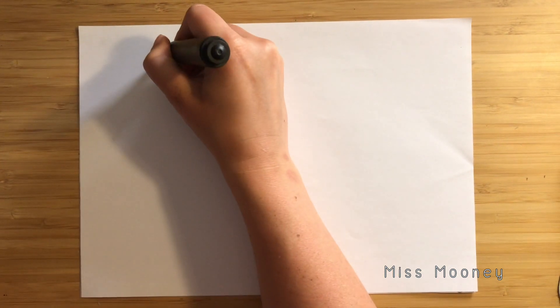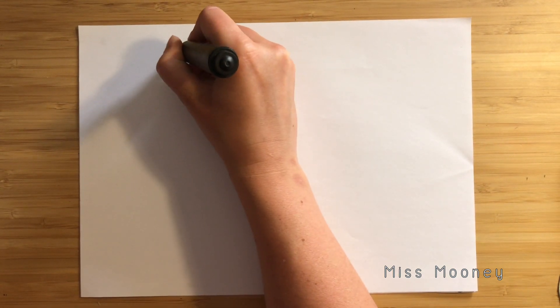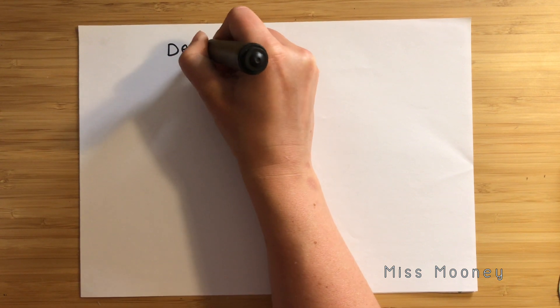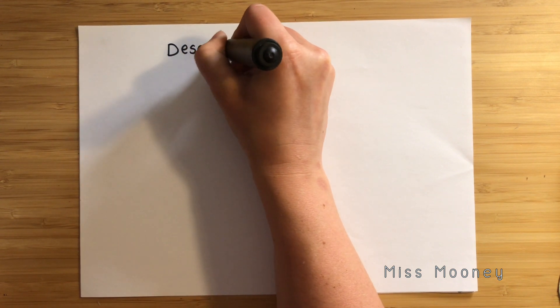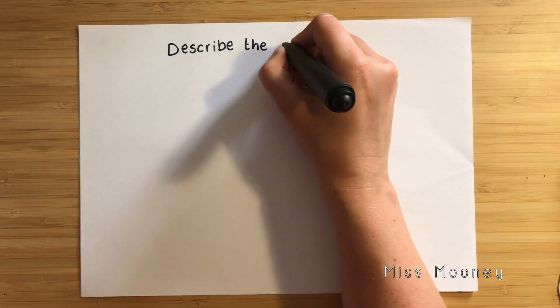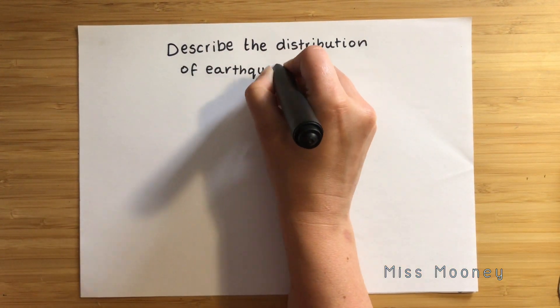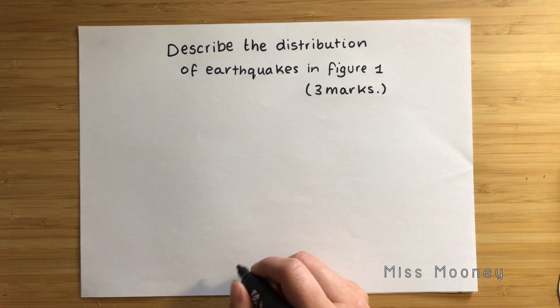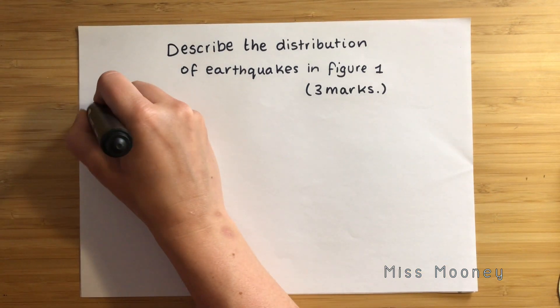Now that we've had a look at where earthquakes commonly occur on the map, we are going to go through an exam question which asks you to look at the map and describe it. The question is: 'Describe the distribution of earthquakes in figure one' — which is a three-mark question. You may be tempted to get started writing straight away but there are a few steps you need to practice first. Once you get into an exam this will take you a few seconds, but you do need to practice this first for it to become second nature.